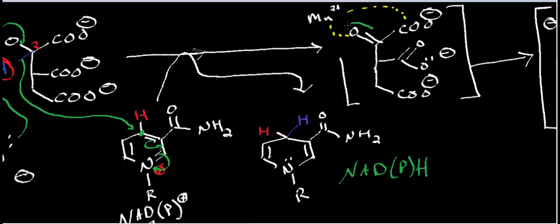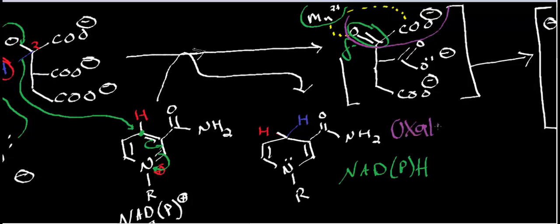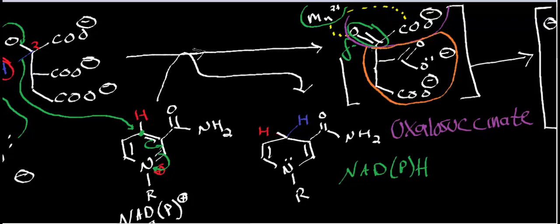In the process of the oxidation, we form a carbonyl with a partial negative charge on the oxygen, while the carboxyl group has a full negative charge. The manganese ion — which could also be magnesium — helps stabilize this molecule, specifically the region containing both of those negative charges. This intermediate is called oxalosuccinate: the oxalo part refers to the ketone-bearing portion, and the succinate part refers to the remaining fragment.